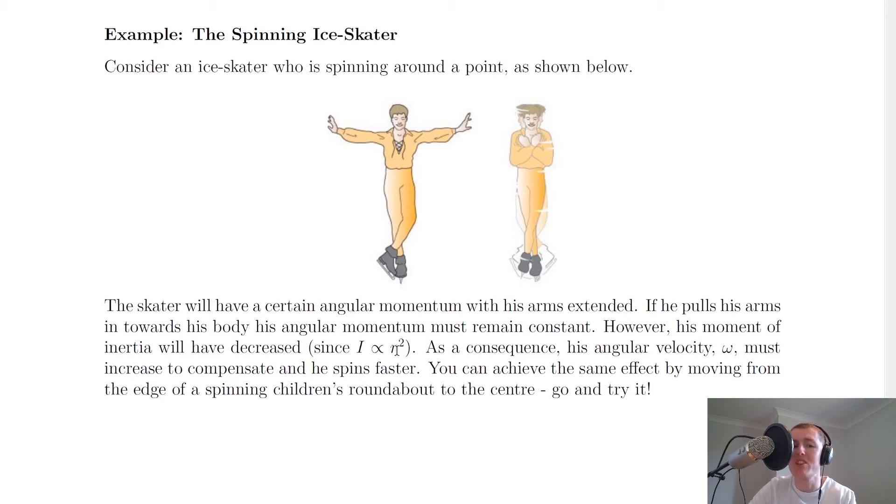So if moment of inertia has decreased, as a consequence, his angular velocity omega must increase to compensate, and he therefore spins faster.